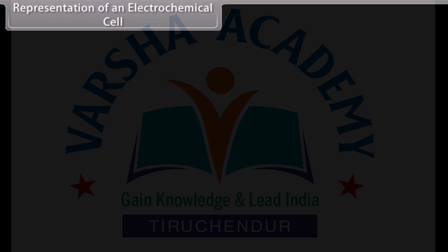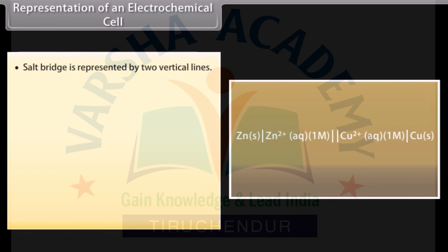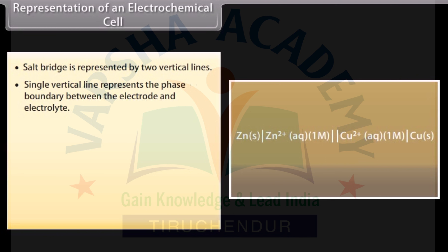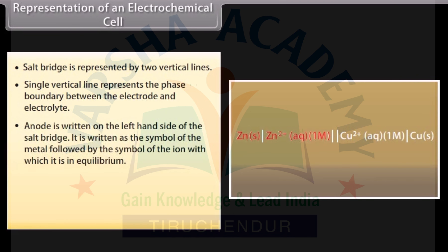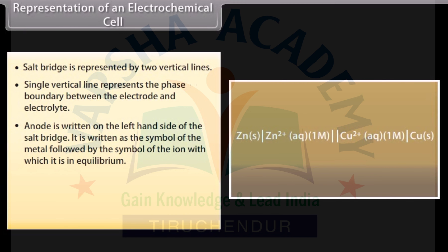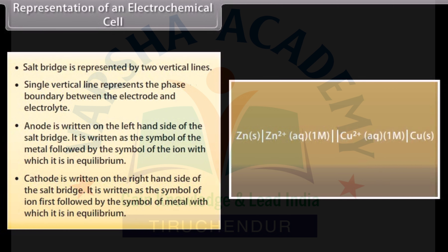Representation of an electrochemical cell: The salt bridge is represented by two vertical lines. A single vertical line represents the phase boundary between the electrode and electrolyte. The anode is written on the left-hand side of the salt bridge as the symbol of the metal followed by the symbol of the ion with which it is in equilibrium. The cathode is written on the right-hand side as the symbol of the ion first, followed by the symbol of the metal.